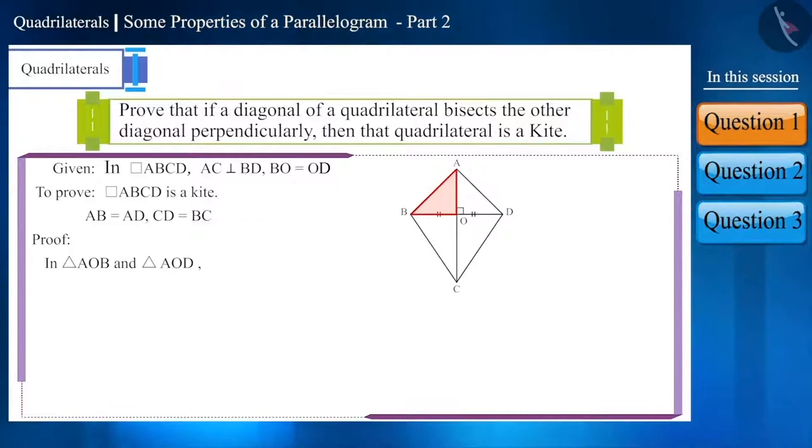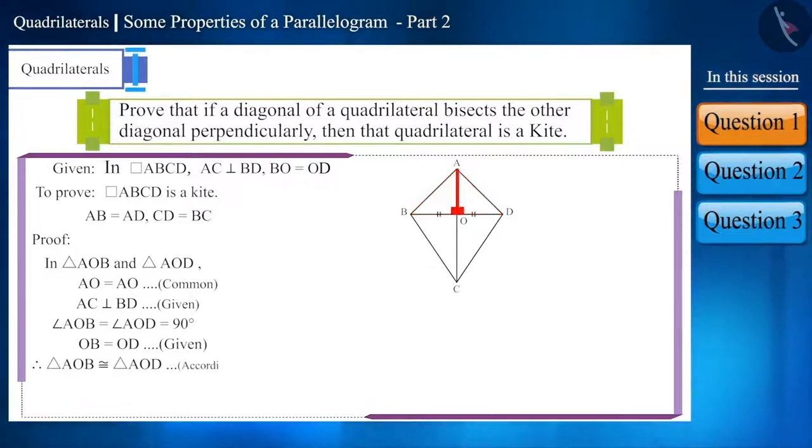So, let's take triangle AOB and triangle AOD. Here, side AO is the common side. We are given that diagonal AC is bisecting diagonal BD perpendicularly. So, angle AOB is equal to angle AOD, each being right angles, and side OB is equal to side OD. Thus, these triangles are congruent according to the SAS congruence rule. The corresponding sides of congruent triangles are equal, so side AB is equal to side AD.